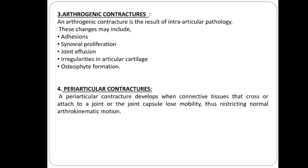Arthrogenic contracture is the result of intra-articular pathology, which includes changes such as adhesion, synovial proliferation, joint effusion, irregularities in articular cartilage, and osteophyte formation. Periarticular contracture develops when connective tissue crossing or attached to a joint or the joint capsule loses mobility, thus restricting normal arthrokinematic motion.